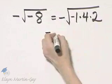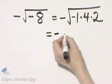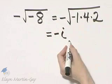I'm rewriting this negative sign. What is the square root of negative 1? The square root of negative 1 is defined to be i.